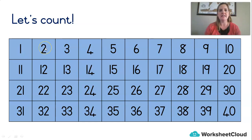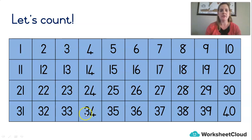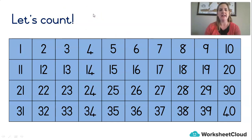Let's count in twos — that's like skip counting: 2, 4, 6, 8, 10, 12, 14, 16, 18, 20, 22, 24, 26, 28, 30, 32, 34, 36, 38, 40. I know you can go much higher than that, but that's enough for now.